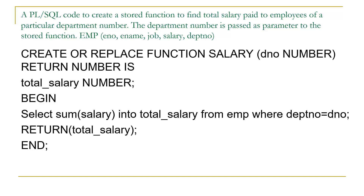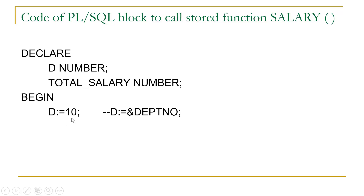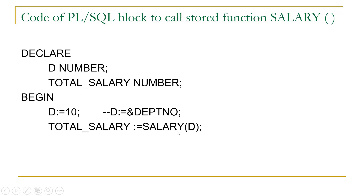Now let us write a PL/SQL code to call this stored function. In the DECLARE section we declare two variables: D and total_salary, both of NUMBER type. D will be used to pass the department number, and total_salary will store the result returned by the stored function. In the BEGIN section we assign value 10 to variable D. Note that you can also assign the value using a substitution variable; since we are working in Oracle Live, we directly assign the value.